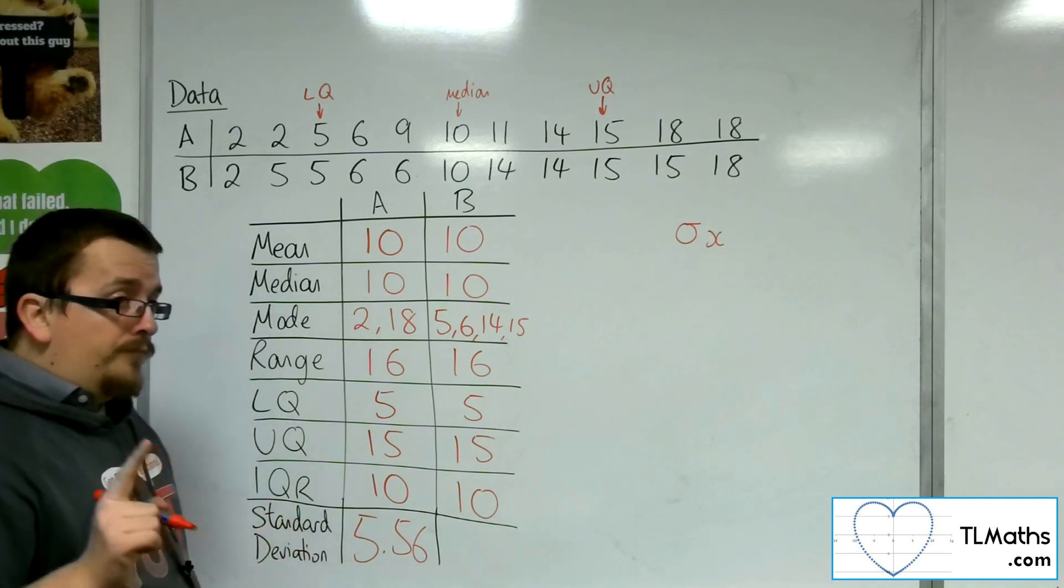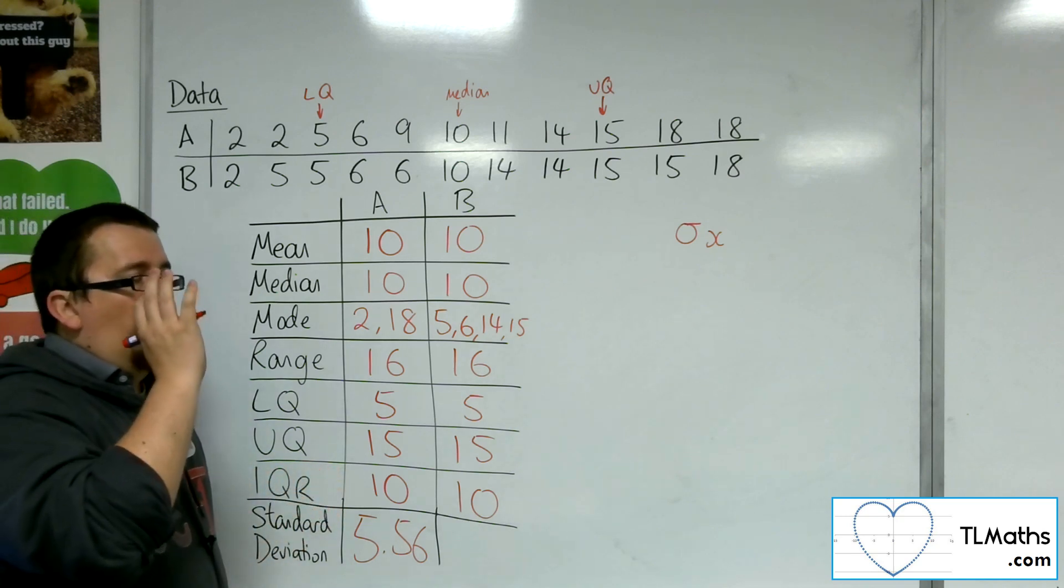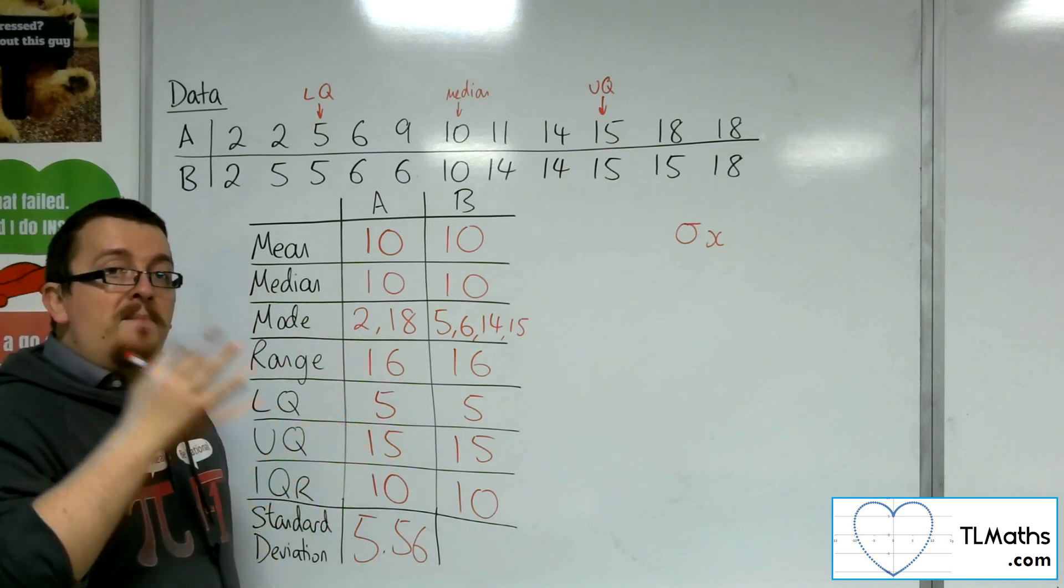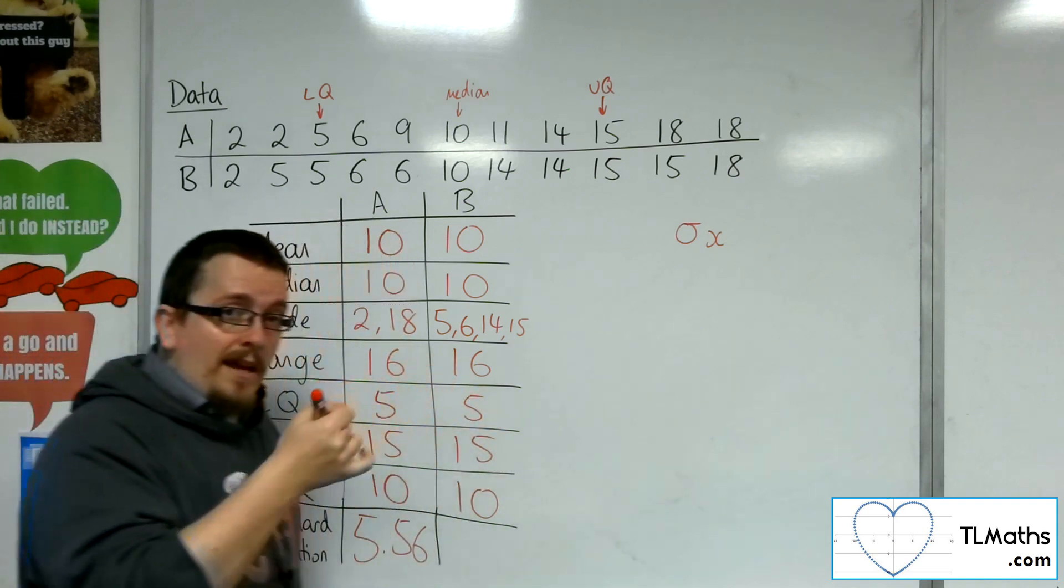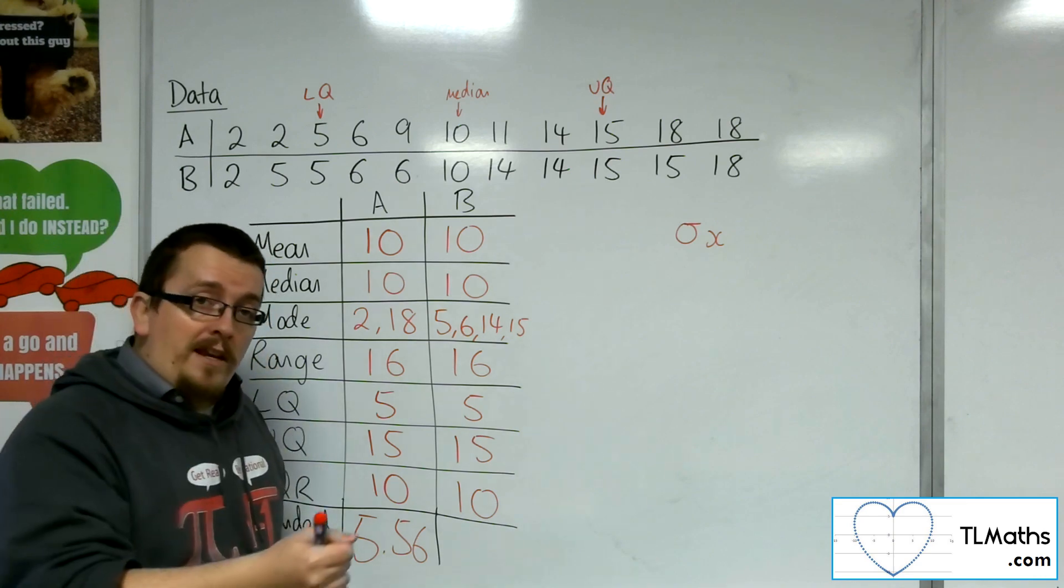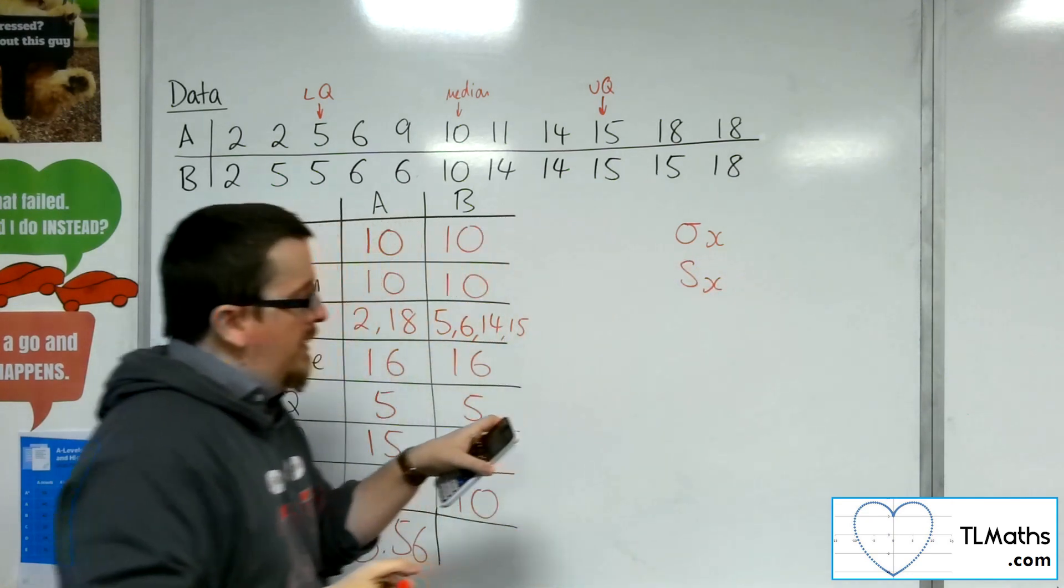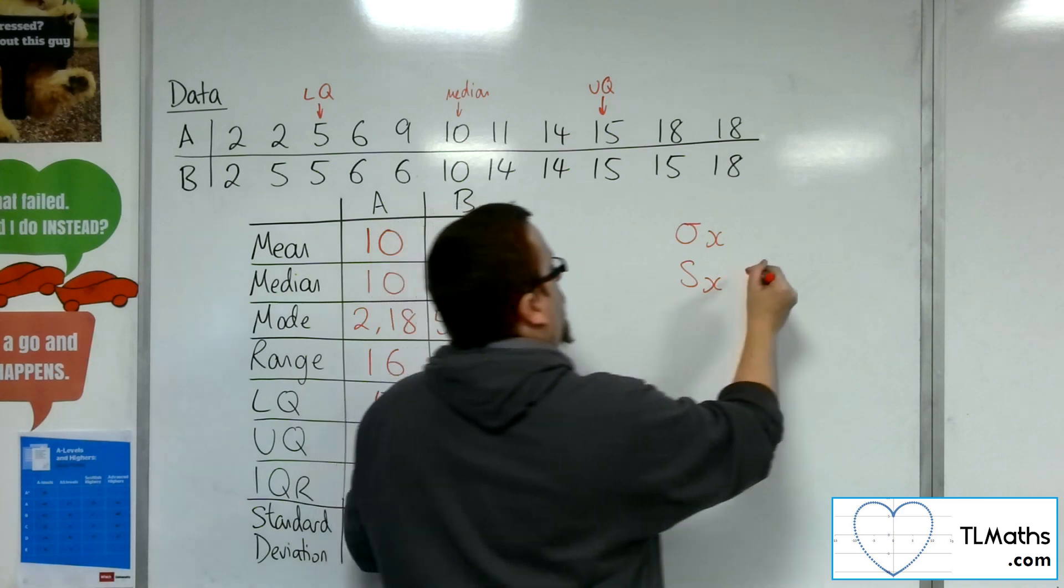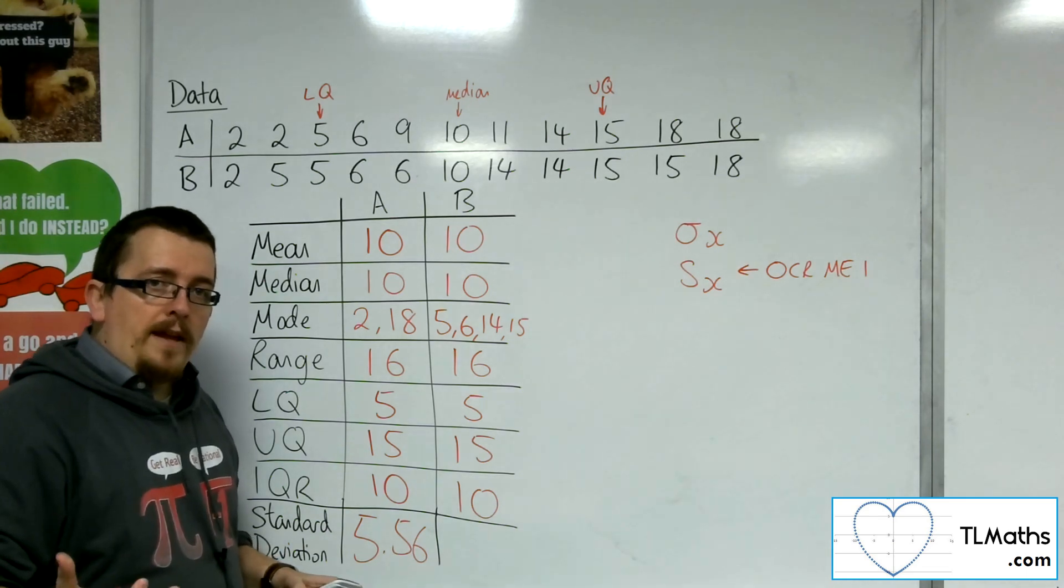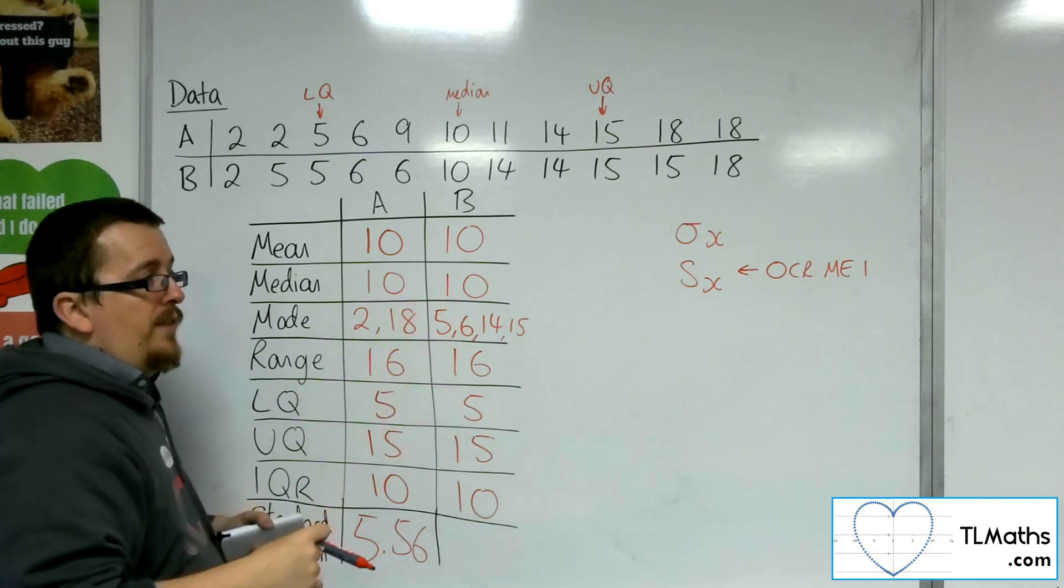Now as a proviso here, just an addition here, if you are studying OCR-MEI, then the standard deviation as it is referred to by MEI, then we look at the calculator, you've got to scroll down to SX. And you've got to use that.